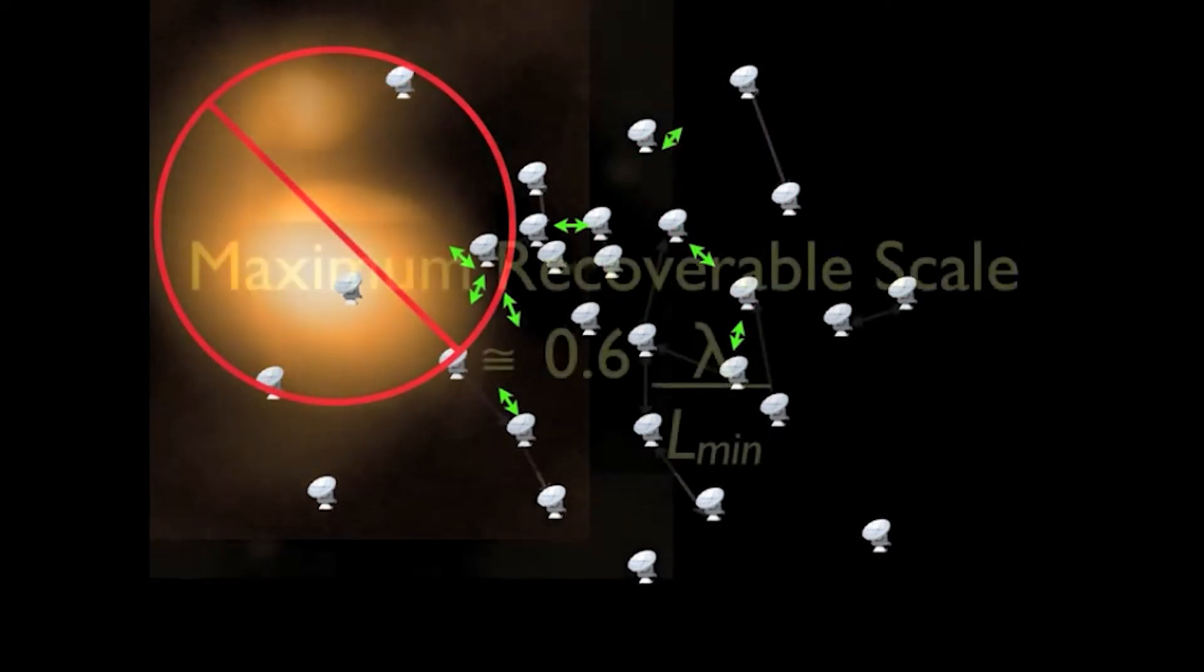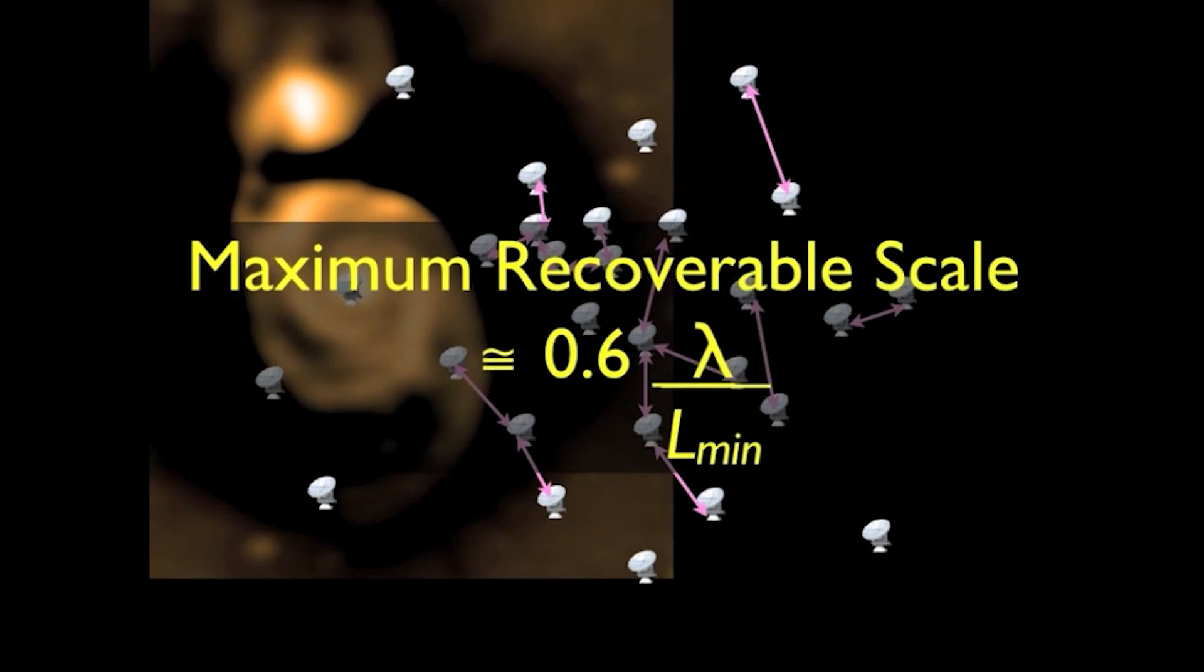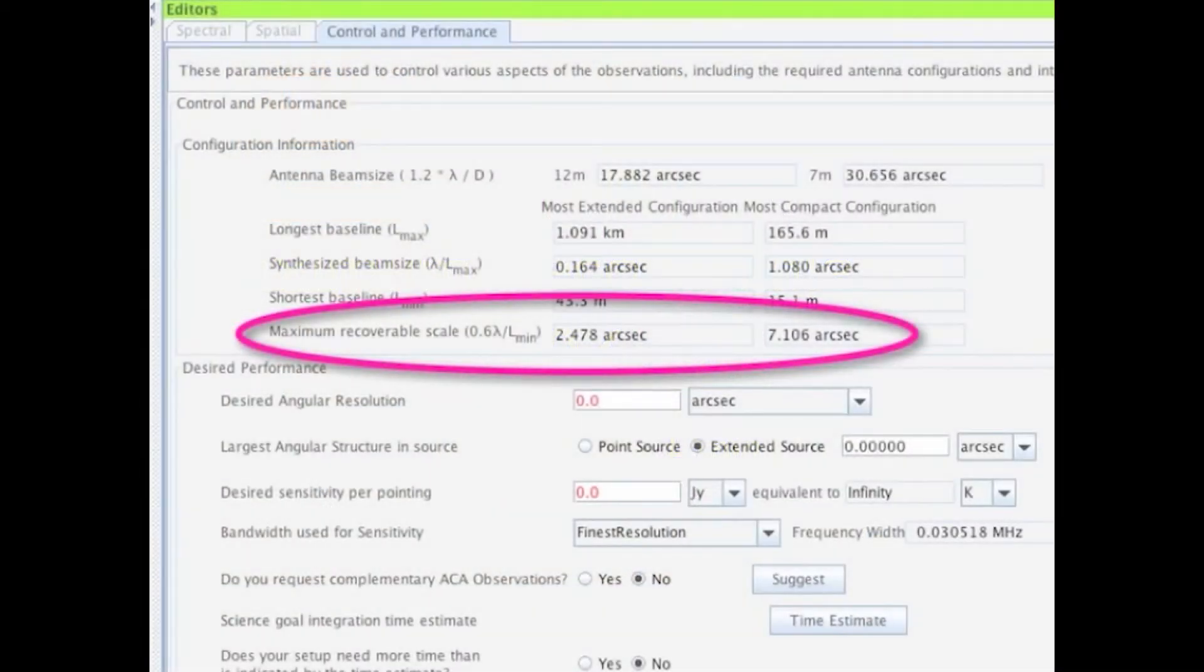Structure in the sky larger than that detected by the smallest baselines is simply not detected at all. The largest scale structure that can be detected by an interferometer is the maximum recoverable scale mentioned in the OT.